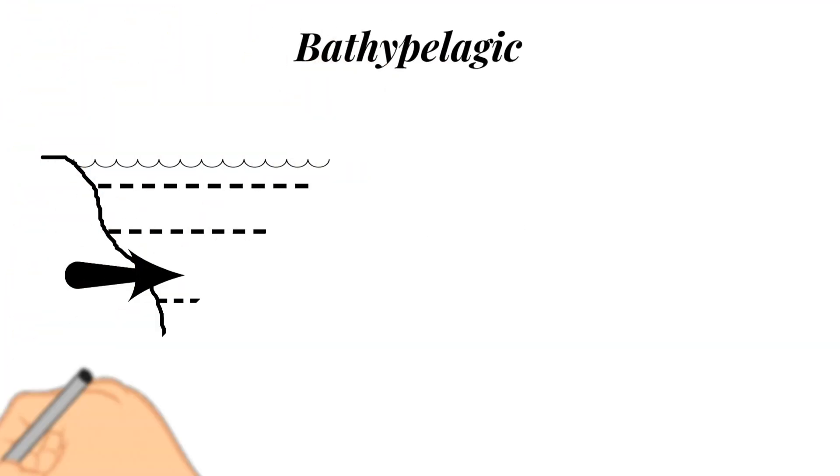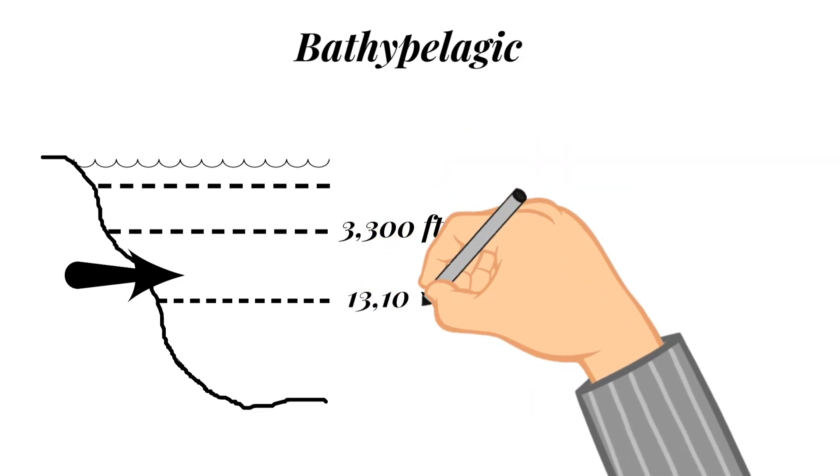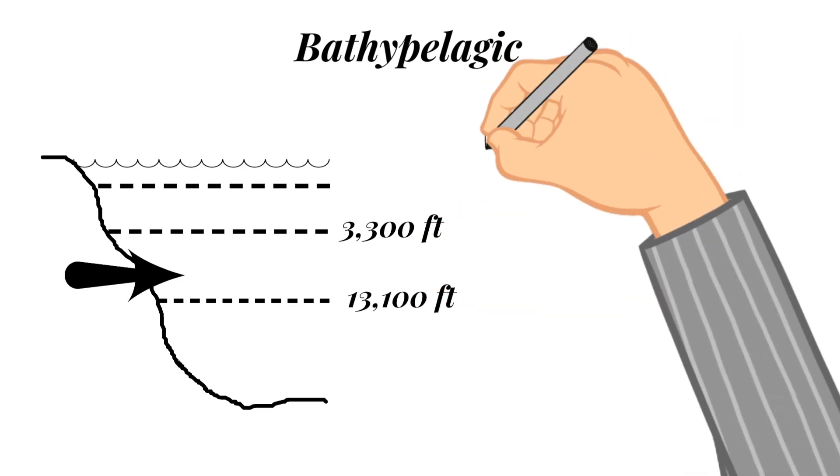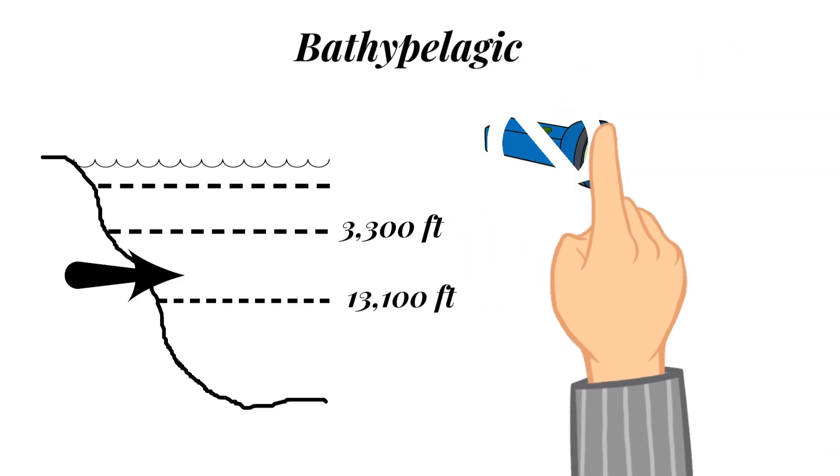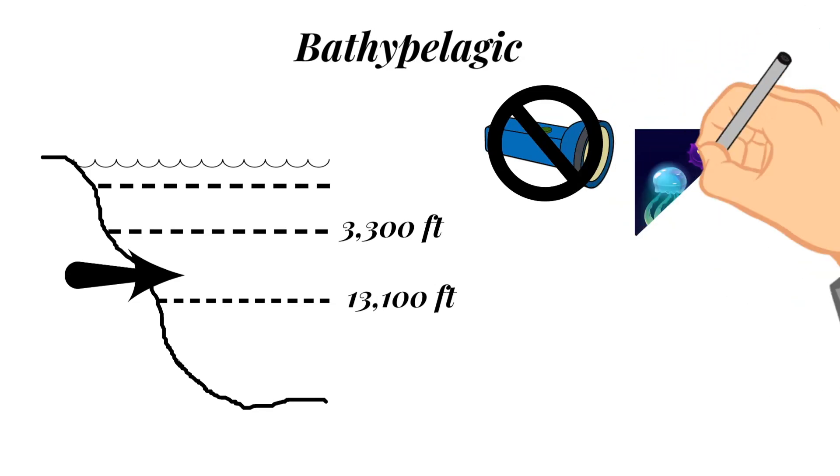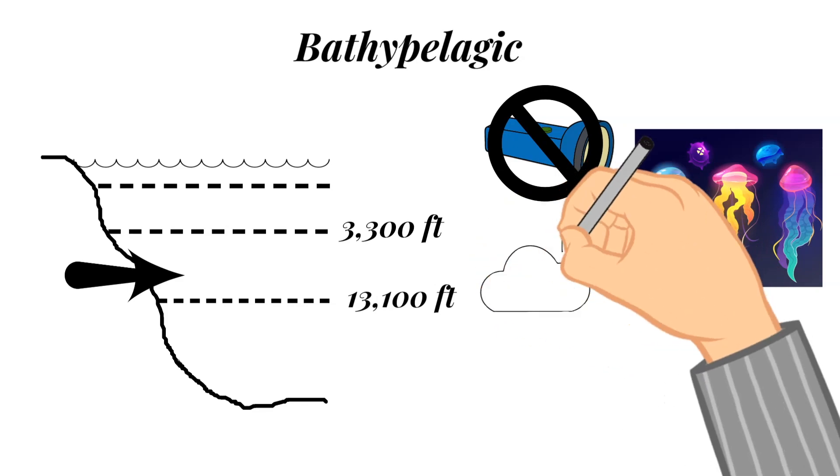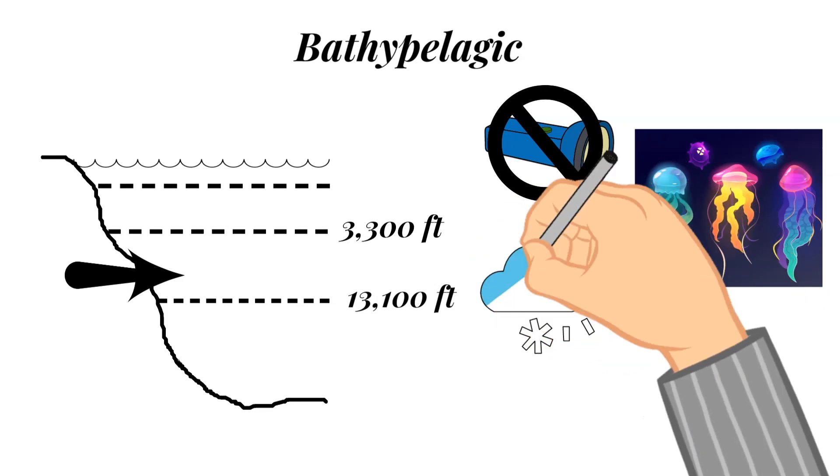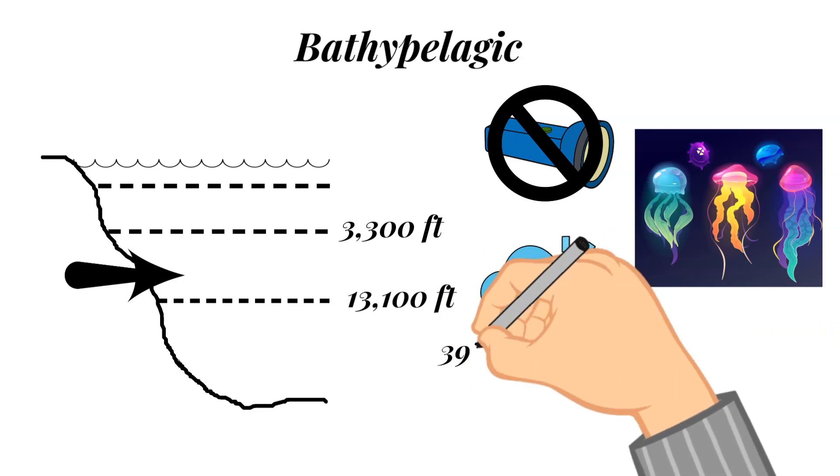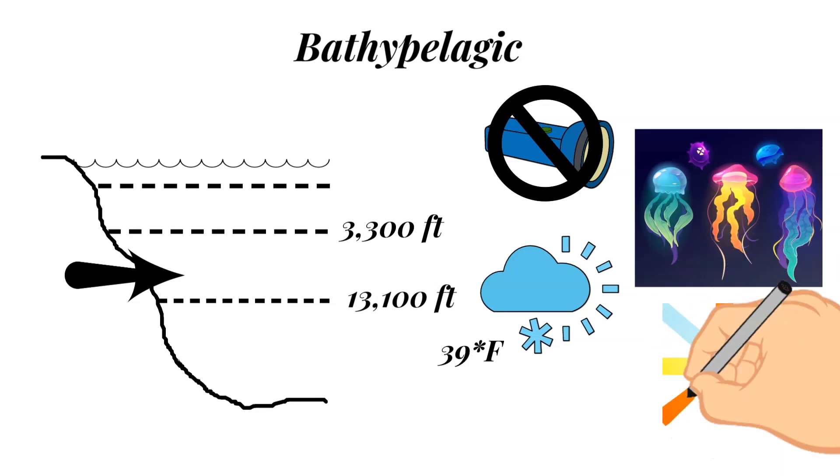This zone is underneath the mesopelagic zone and it extends from 3,300 feet deep to 13,100 feet deep. This zone is in constant darkness. And so it is considered the midnight zone. The only light at this depth and lower comes from bioluminescence of the animals that live there. Now, this zone, unlike the mesopelagic zone, has a constant temperature and it never fluctuates very far from about 39 degrees Fahrenheit.